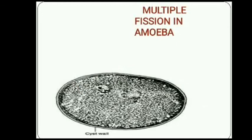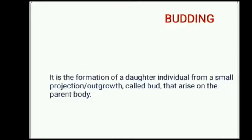Thus, amoeba undergoes multiple fission under unfavorable conditions. Now, budding: it is the formation of a daughter individual from a small projection or outgrowth called a bud that arises on the parent body.